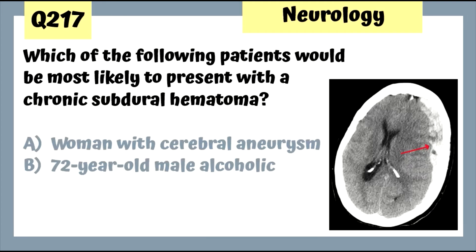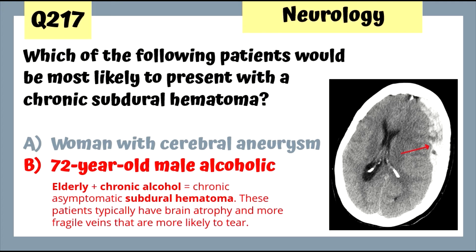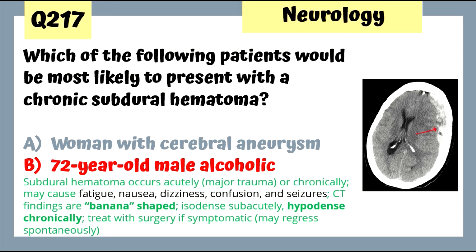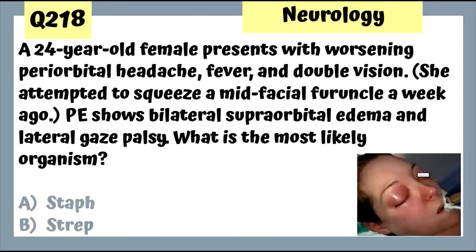Question 217: Which patient would most likely present with a chronic subdural hematoma? Chronic subdural hematoma is seen in alcoholics and the elderly. These patients typically have brain atrophy and more fragile veins that are more likely to tear. The CT scan shows a banana or moon-shaped hemorrhage.